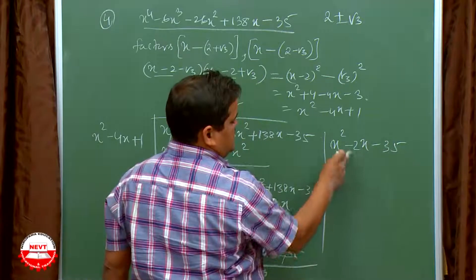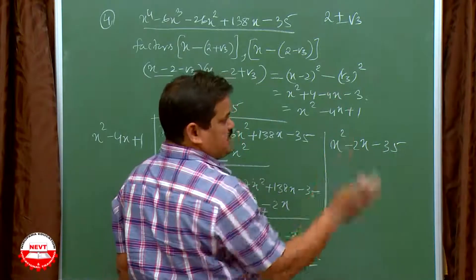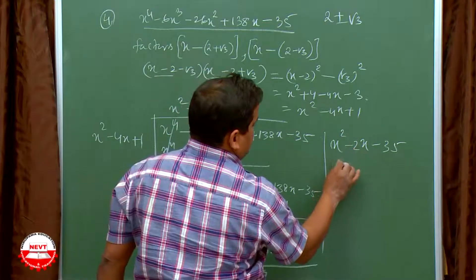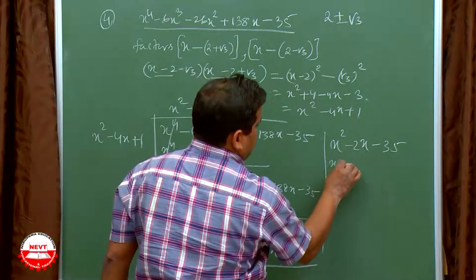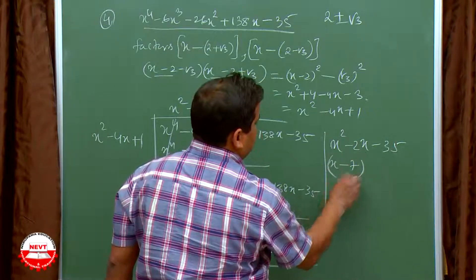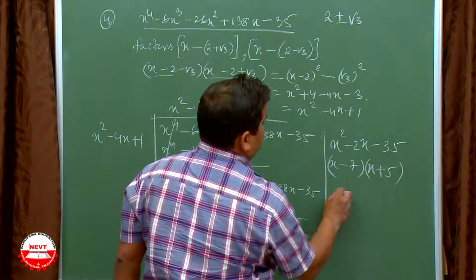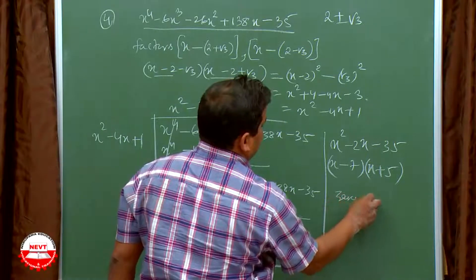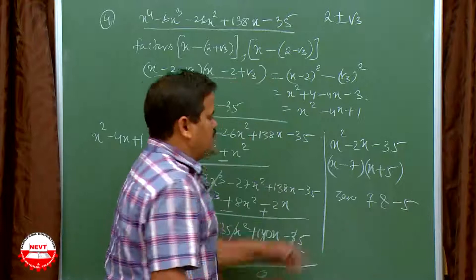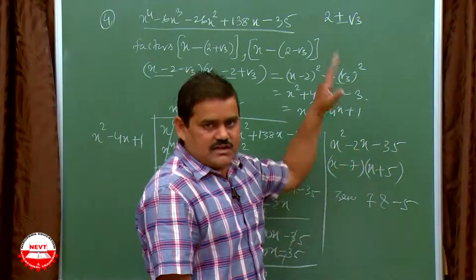Factorize x² minus 2x minus 35 by splitting the middle term. Product is minus 35, difference is 2 — that means 7 and 5. Since it is minus 2x, write (x minus 7)(x plus 5). So the other zeros are 7 and minus 5.